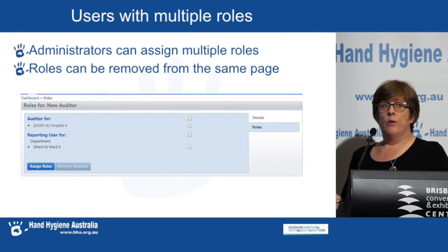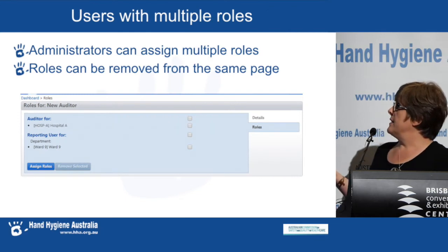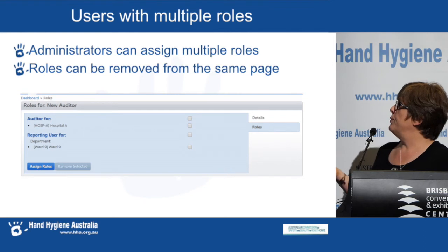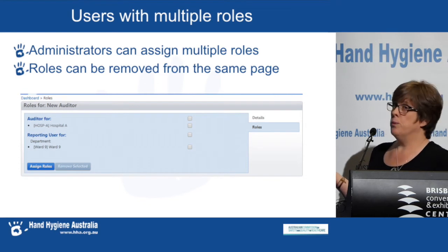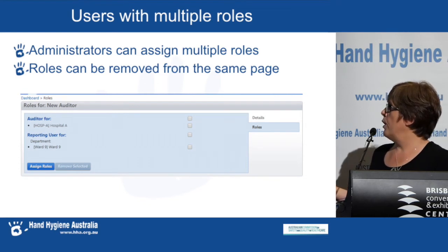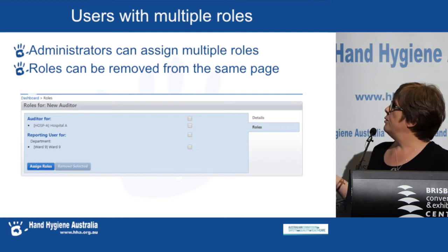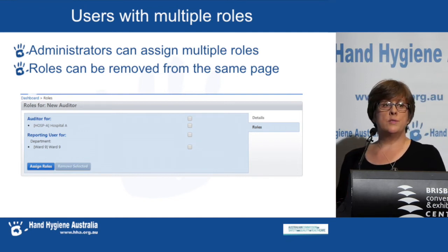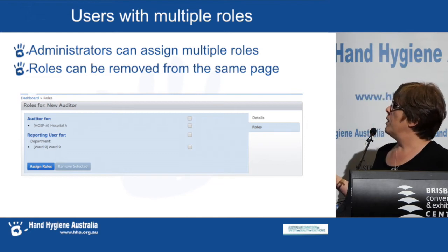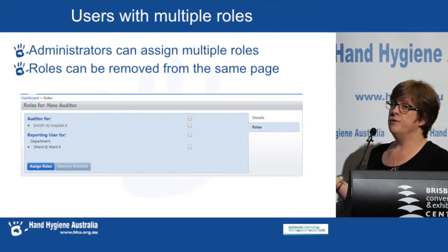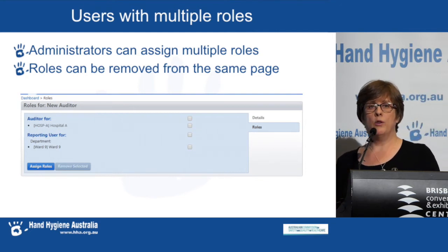You can then go back and add another role for that person. In this example, the person is an auditor for the whole hospital and a reporter just for one department. If they need a further role, you click assign roles again. If you need to remove them from those roles, you do it from the profile page — click one of the buttons at the side, then click remove selected, and they will be taken off that role.